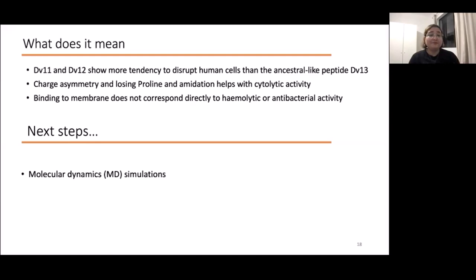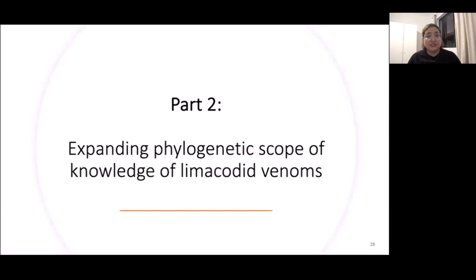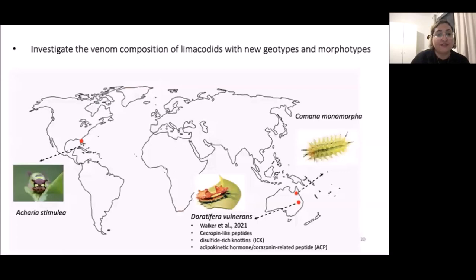I said that we published a study on Doratifera vulnerans, but we still don't know if other caterpillars in different genotypes and morphotypes would have a different venom. We chose two different candidates: another Australian species called Comana monomorpha, which represents a different morphotype of Limacodidae because they are heavily covered with venom scoli over the entire dorsal and lateral surface whereas the other two are not; and Acharia stimulea, or saddleback caterpillar, which is native to Florida as a candidate from a different genotype.